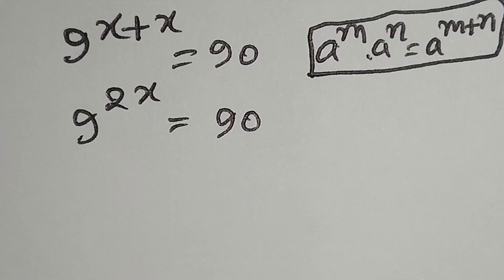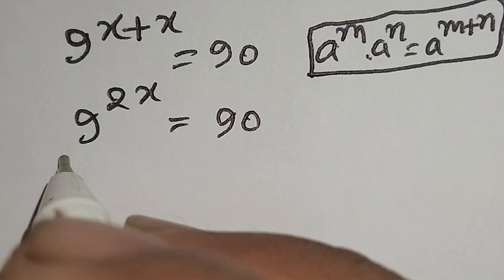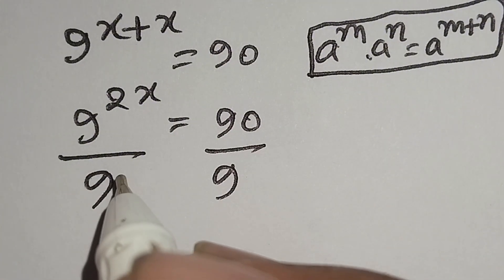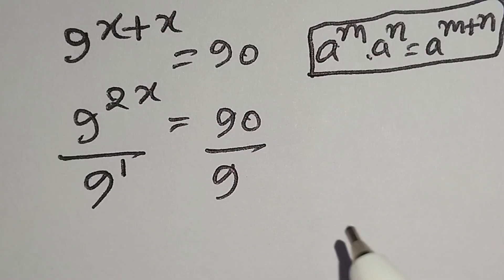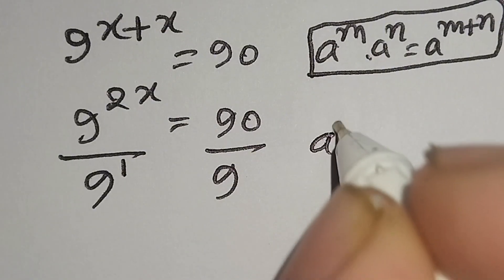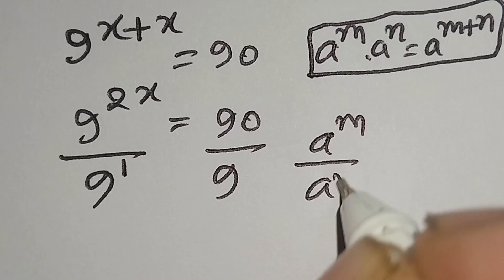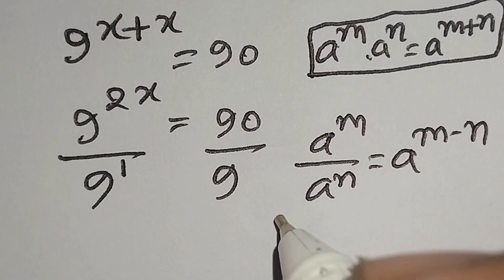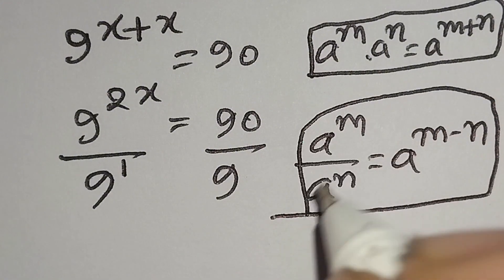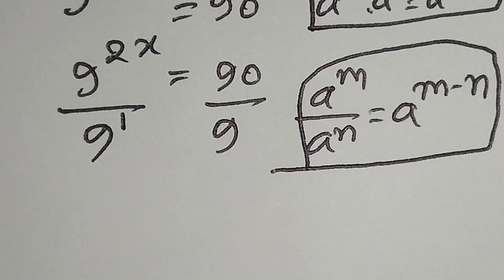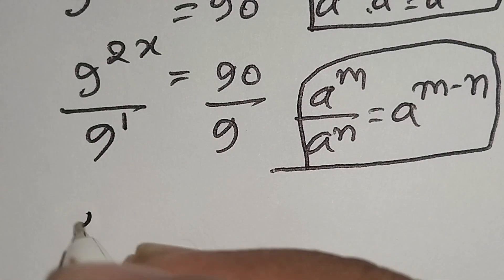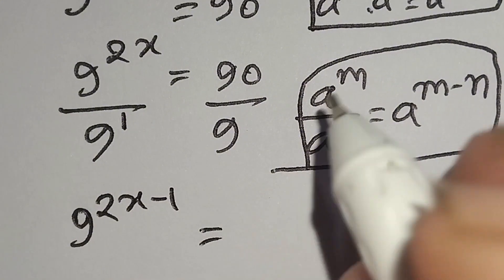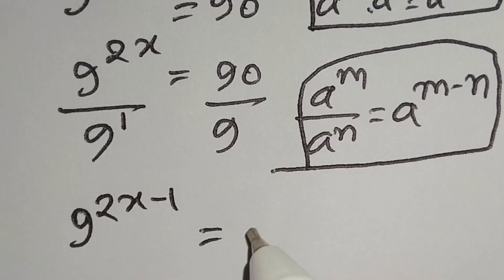Now we will divide both sides by 9, so we write 90 over 9. We can write 9 as 9 to the power 1, and we know a to the power m over a to the power n is equal to a to the power m minus n. According to this identity, 9 to the power 2x over 9 to the power 1 gives 9 to the power 2x minus 1, and 90 over 9 equals 10.